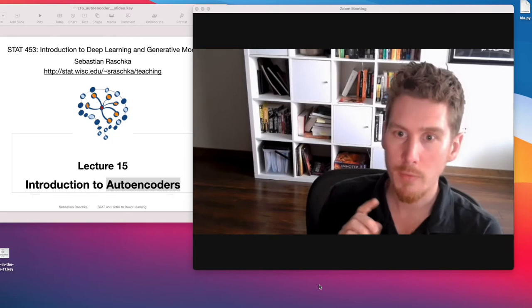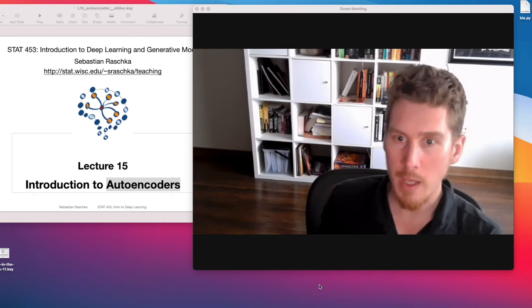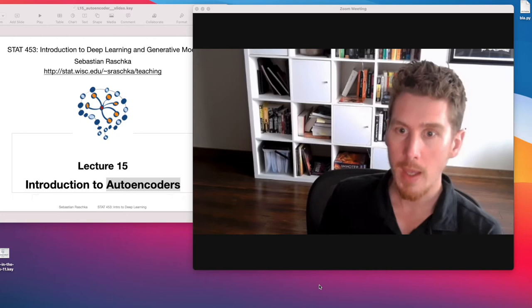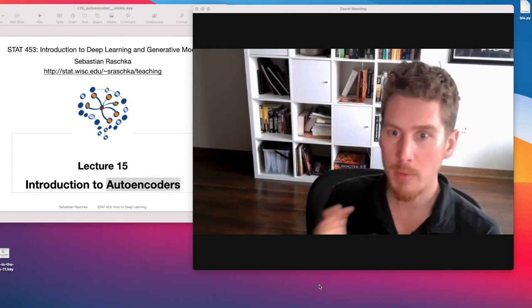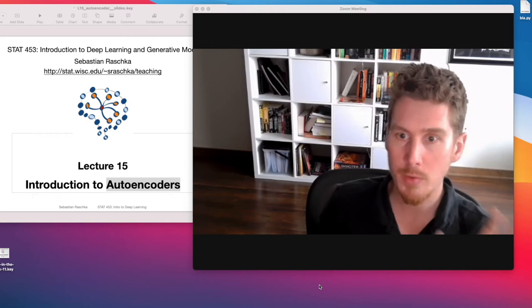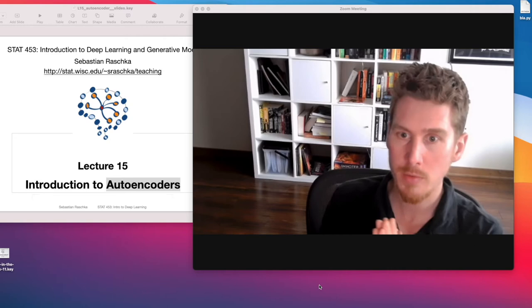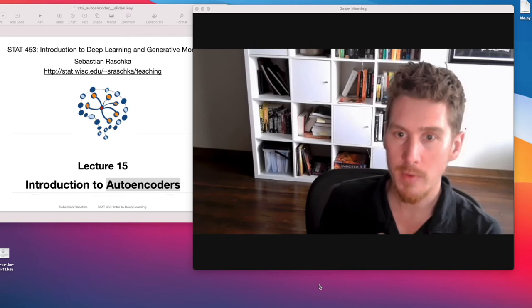But this is a great introduction to follow up topics that we'll be talking about later on, for instance, a variational autoencoder which allows us to sample data from a distribution. And we will also talk about generative adversarial networks, which is also essentially somewhat related to the autoencoder here. In the context of the autoencoder, we will also encounter topics like transposed convolutions and so forth, which will be useful later on when we talk about generative adversarial networks.